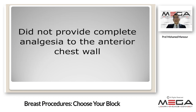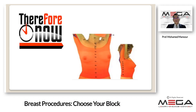The paravertebral block did not provide complete analgesia to the anterior chest wall, since the innervation was not exclusive to the thoracic spinal nerves, but also from the brachial plexus via the medial and lateral pectoral nerves. Therefore, the pectoral block came into the scenario to address these issues.